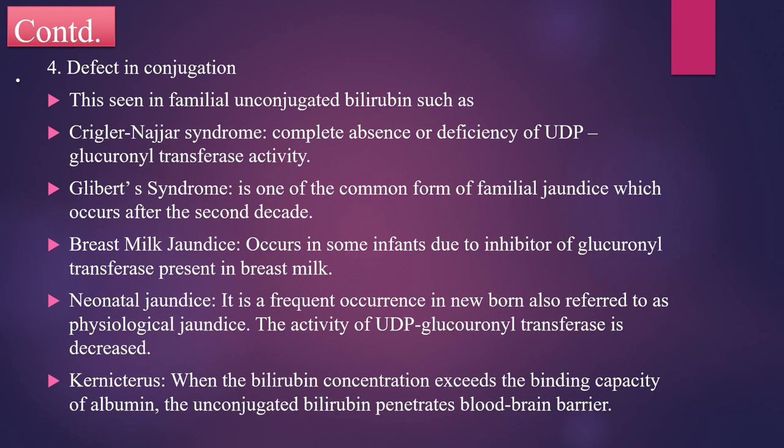Next is neonatal jaundice, also known as physiological jaundice. The activity of UDP-glucuronyl transferase is decreased in this condition. Next is kernicterus — when the bilirubin concentration exceeds the binding capacity of albumin, the unconjugated bilirubin penetrates the blood-brain barrier.